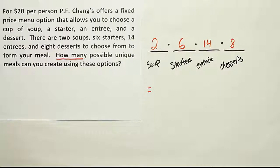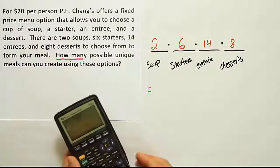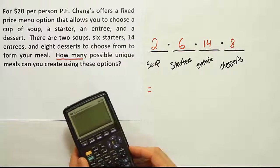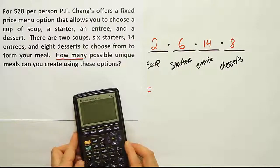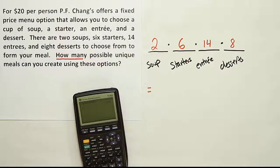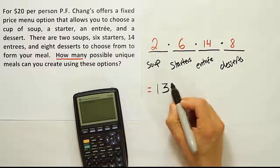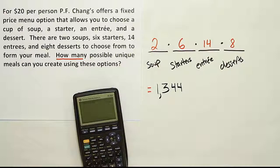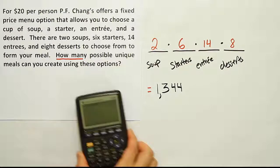So it'll be two times six is 12, 12 times 14 times eight. When you're done, you get 1,344 unique meals, 1,344 unique dinners that you could create using this fixed price menu at P.F. Chang's.